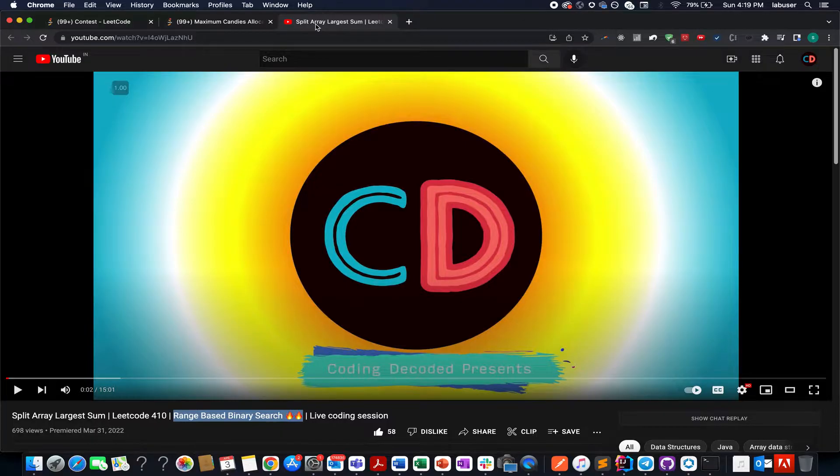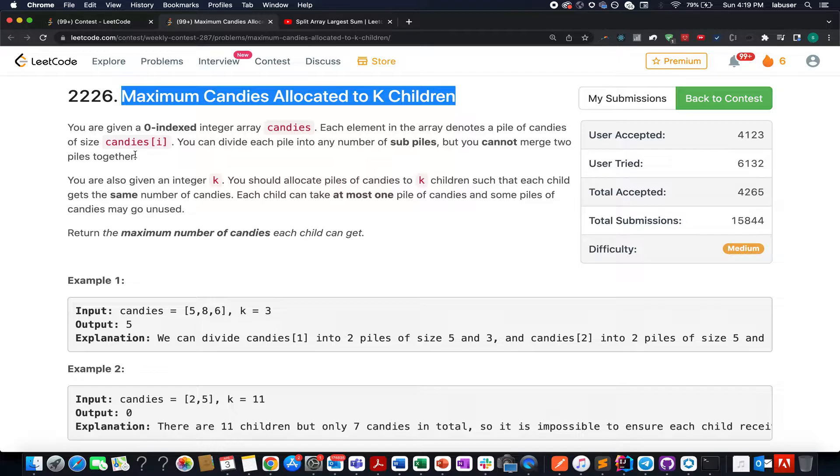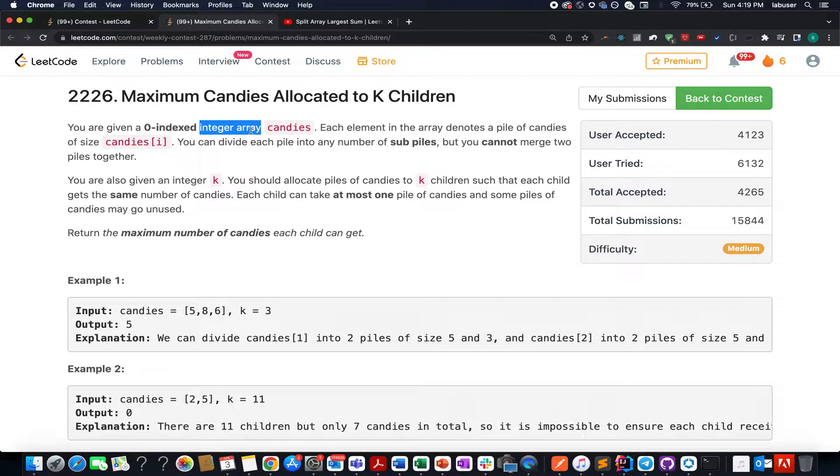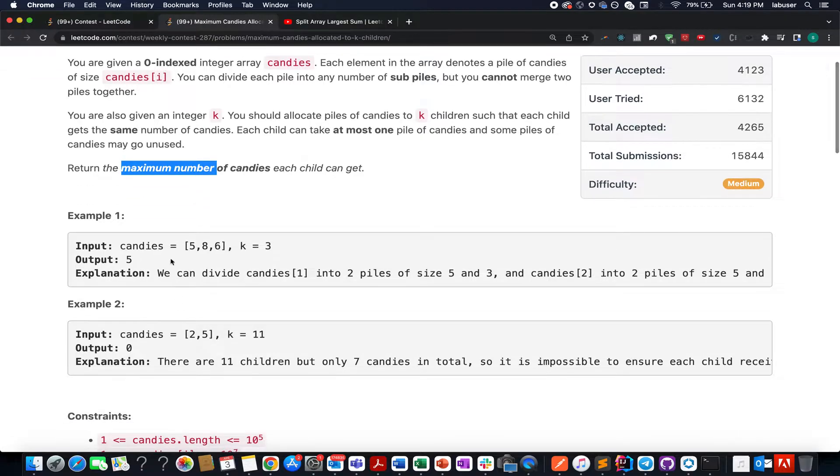Once you're done with this, do practice because it will help strengthen the concept of range-based binary search. To get a good hold of the concept, let's quickly extract the maximum out of the question. We're given an array that represents candies and an integer k. We need to allocate piles of candies to k children such that each child gets the same number of candies.